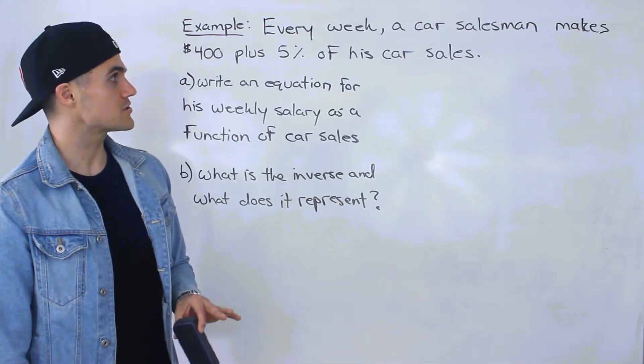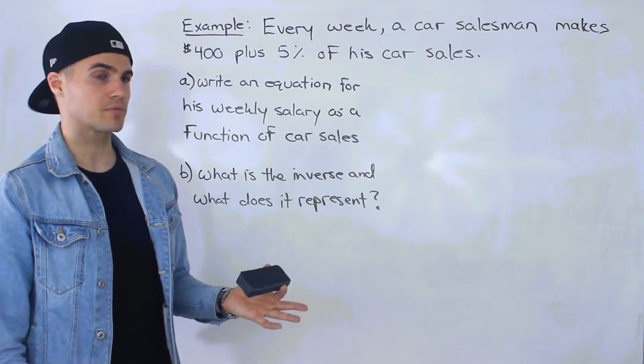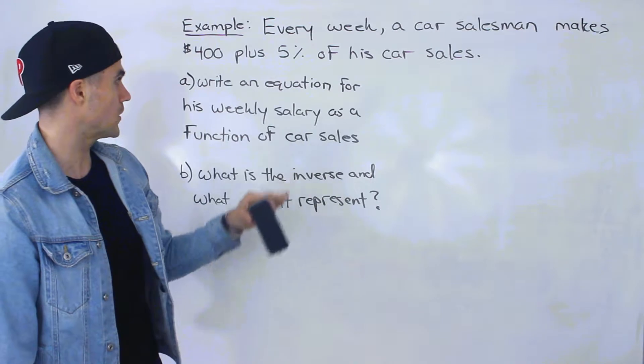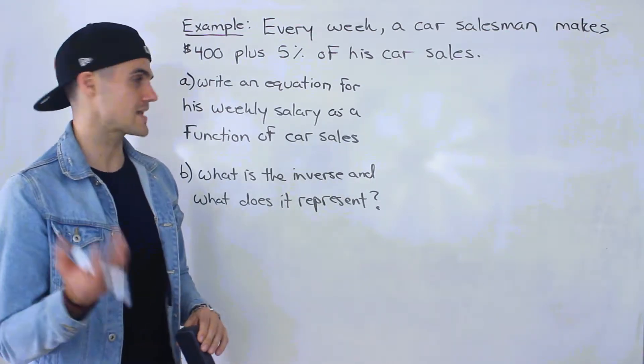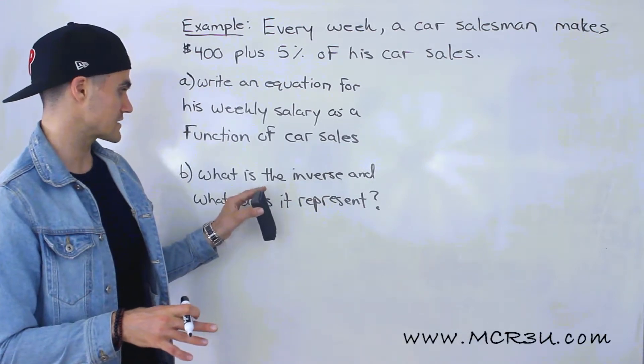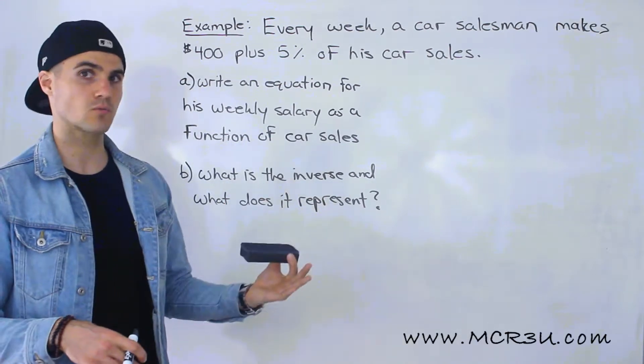Every week a car salesman makes $400 plus 5% of his car sales, and we have two questions. The first one, we have to write an equation for his weekly salary as a function of car sales, and then for part B they're asking us what is the inverse and what does it represent.